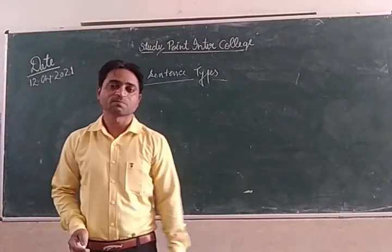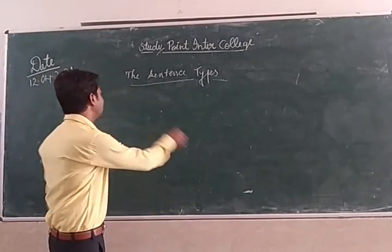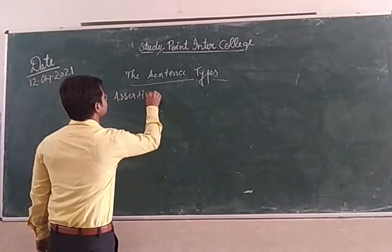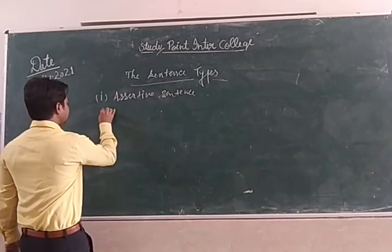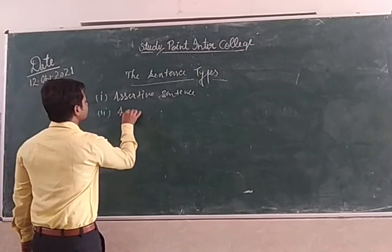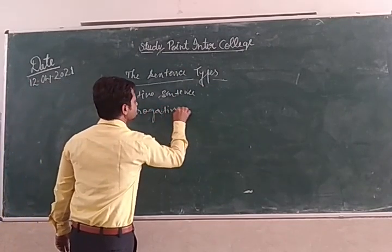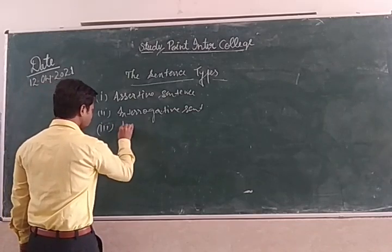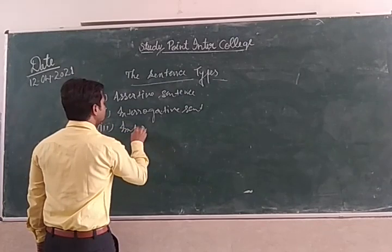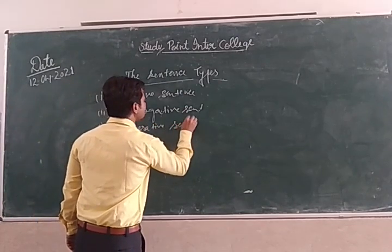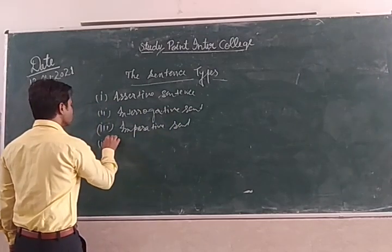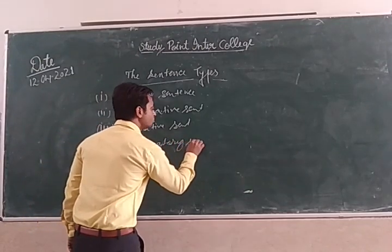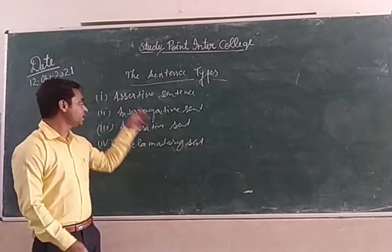How many types of sentences are there? Now we will learn how many types of sentences there are. The first one is assertive sentence, the second one is interrogative sentence, the third one is imperative sentence, and the fourth one is exclamatory sentence. These are the types of sentences.